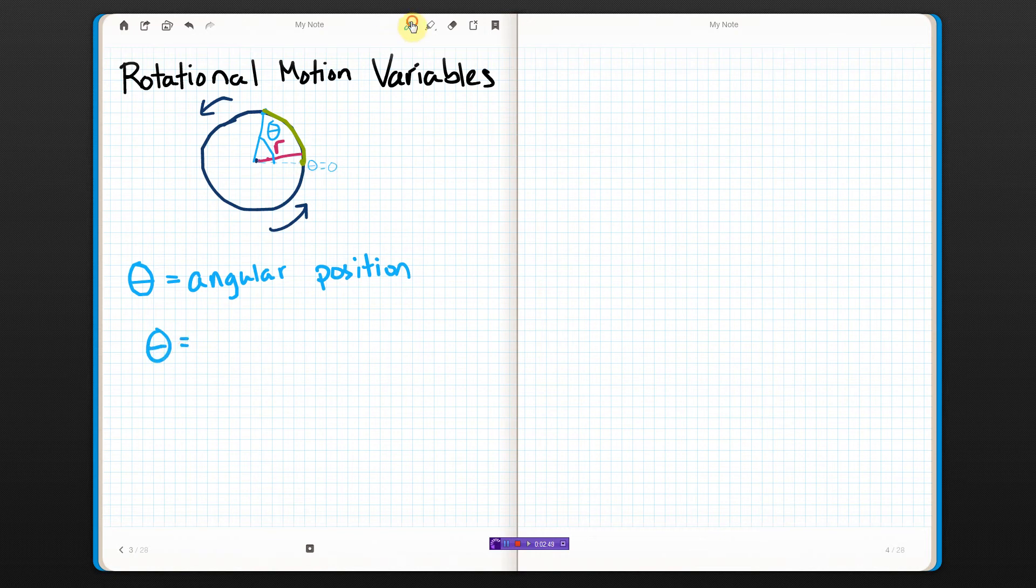You don't actually use that very often, but we should write it down. This arc length is s; you may or may not remember that from algebra two. By the way, when you do that, that only works if you're working in radians.